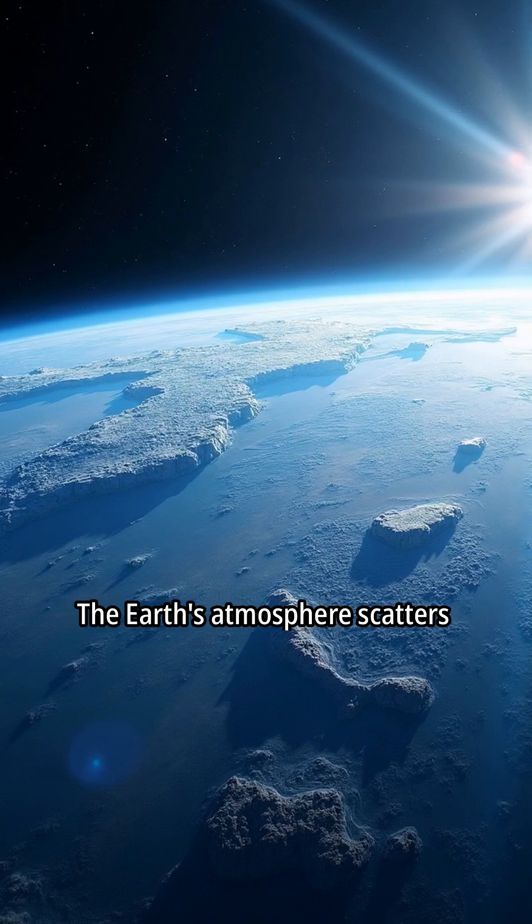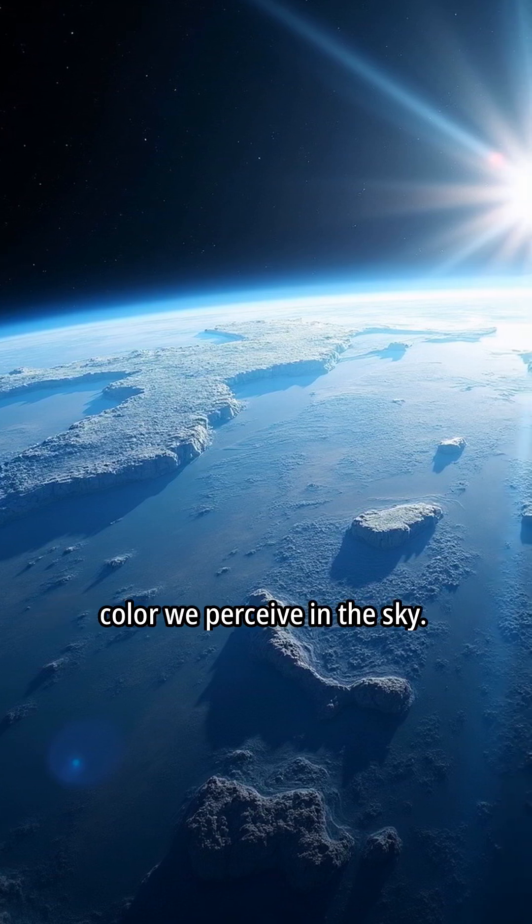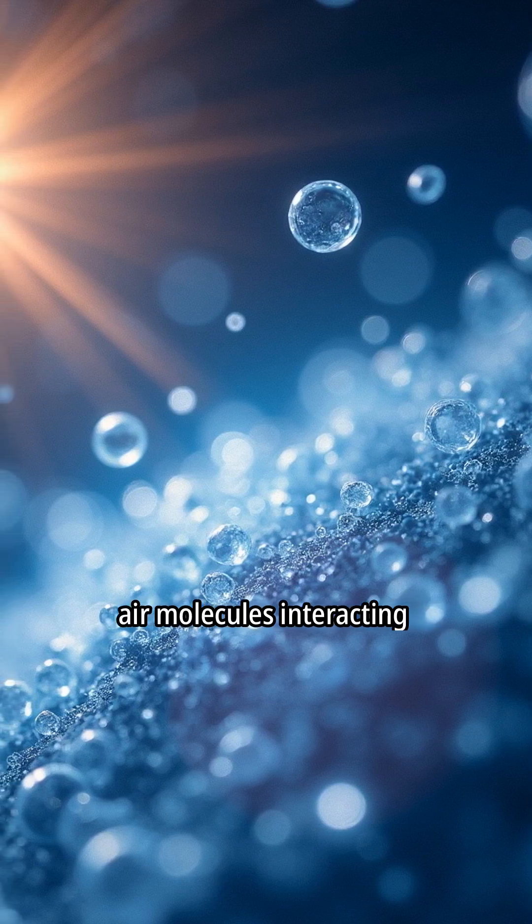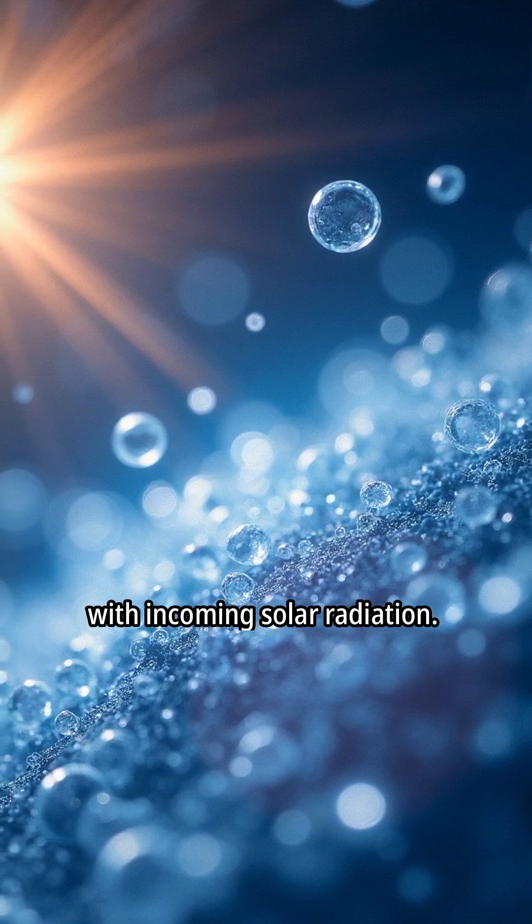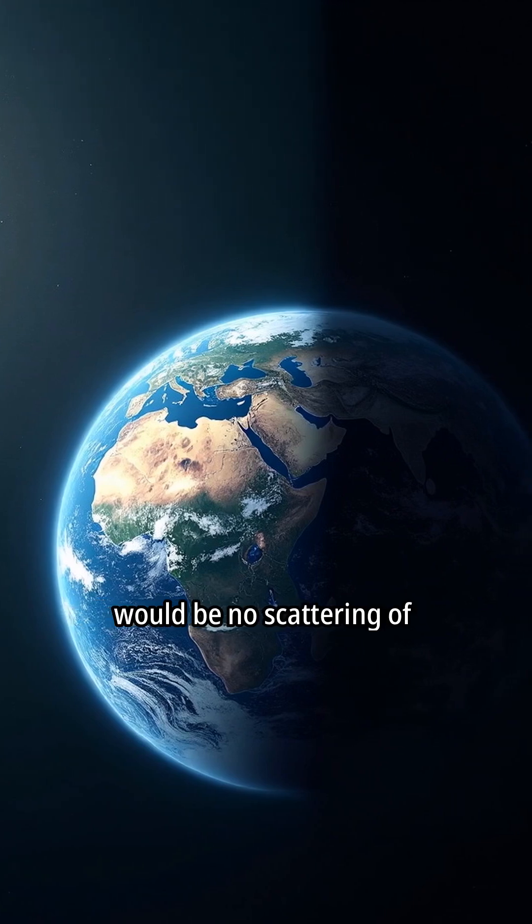The Earth's atmosphere scatters sunlight, creating the blue color we perceive in the sky. This scattering is caused by air molecules interacting with incoming solar radiation. Without an atmosphere, there would be no scattering of light.